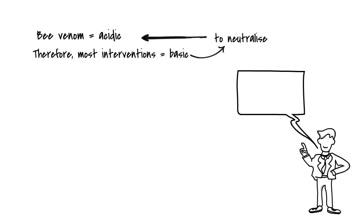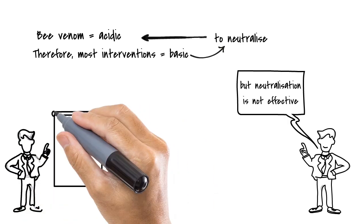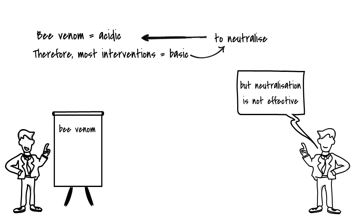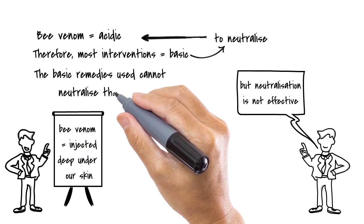But in actual fact, the neutralization is not effective. This is because the bee venoms are injected deep under our skins. The venom is therefore not superficial and the basic remedies cannot neutralize the venom.